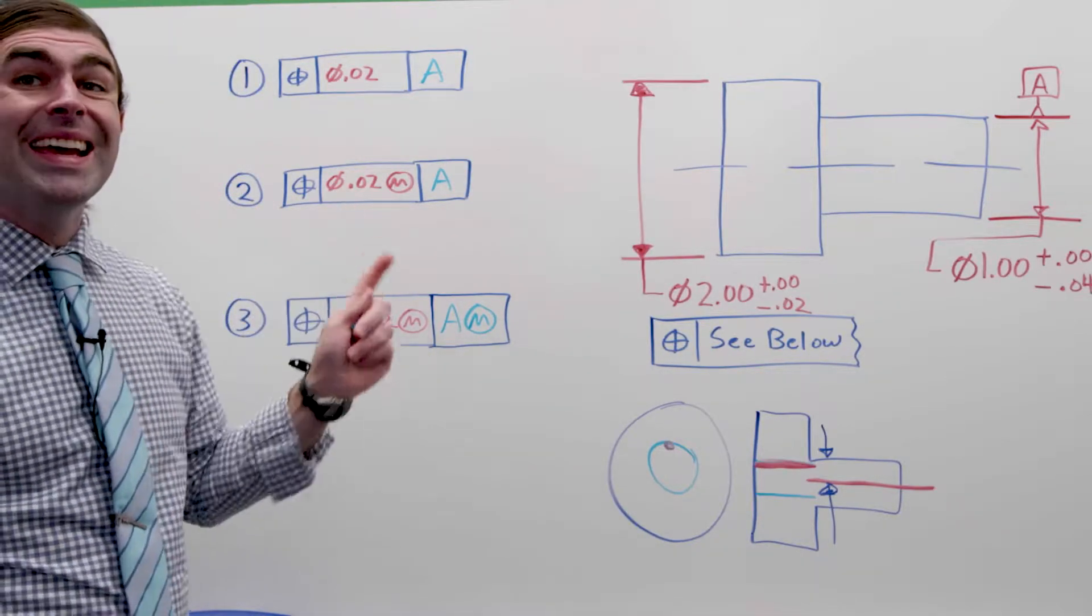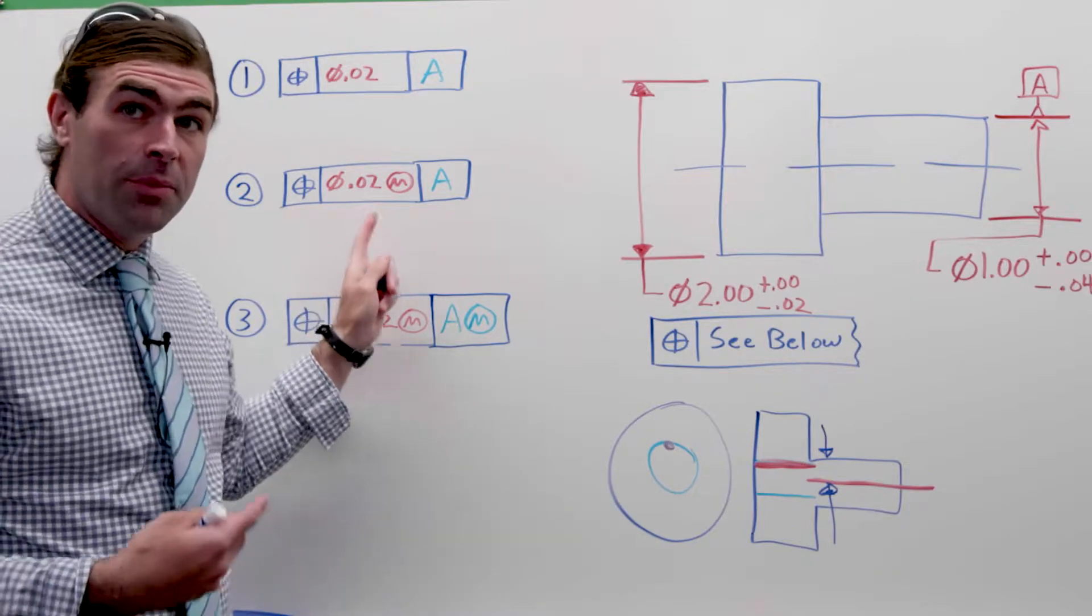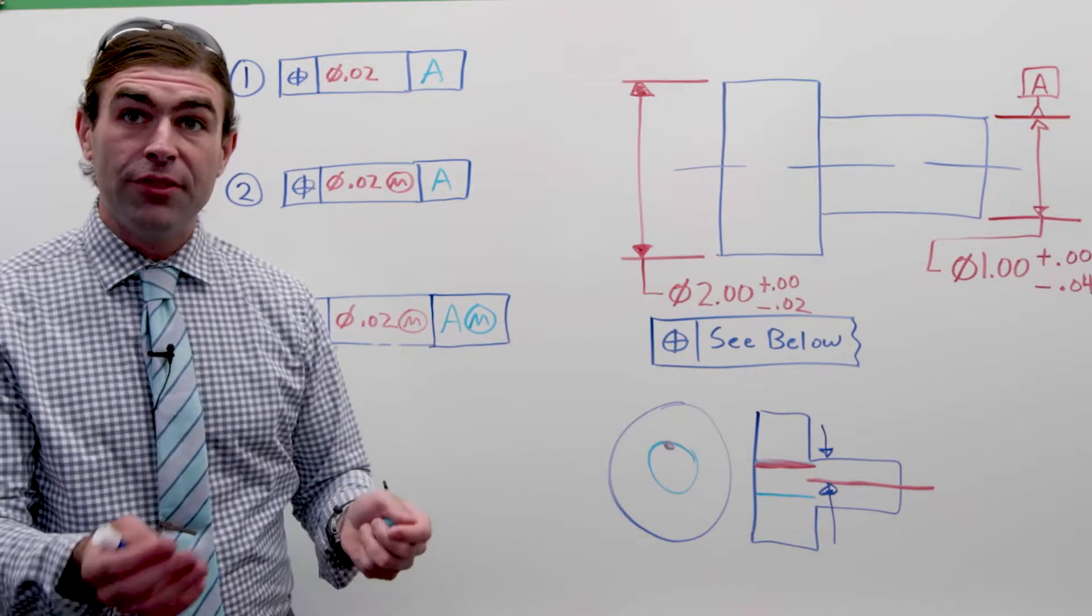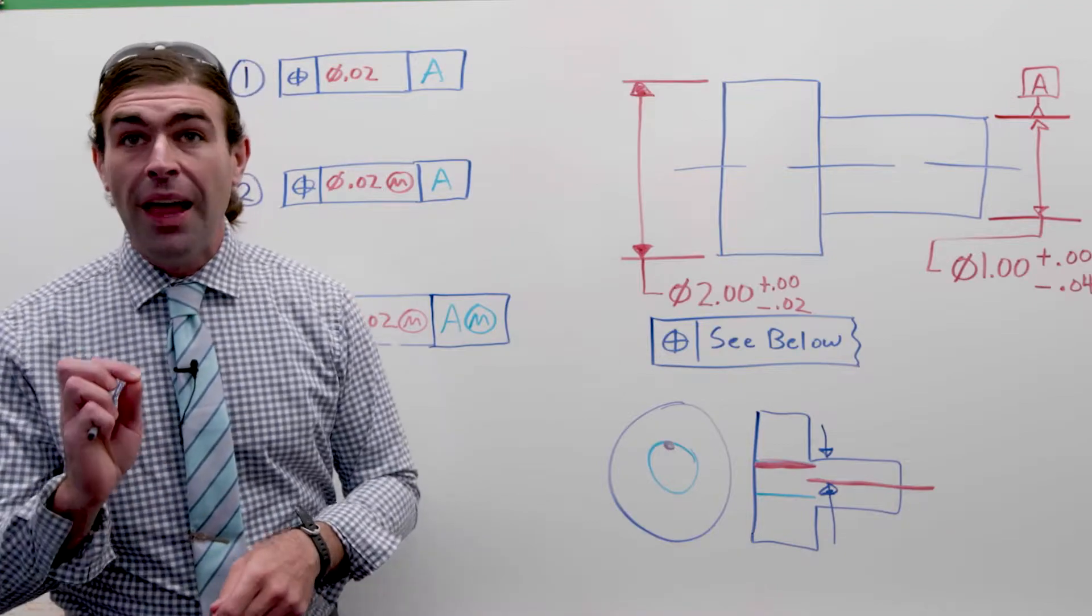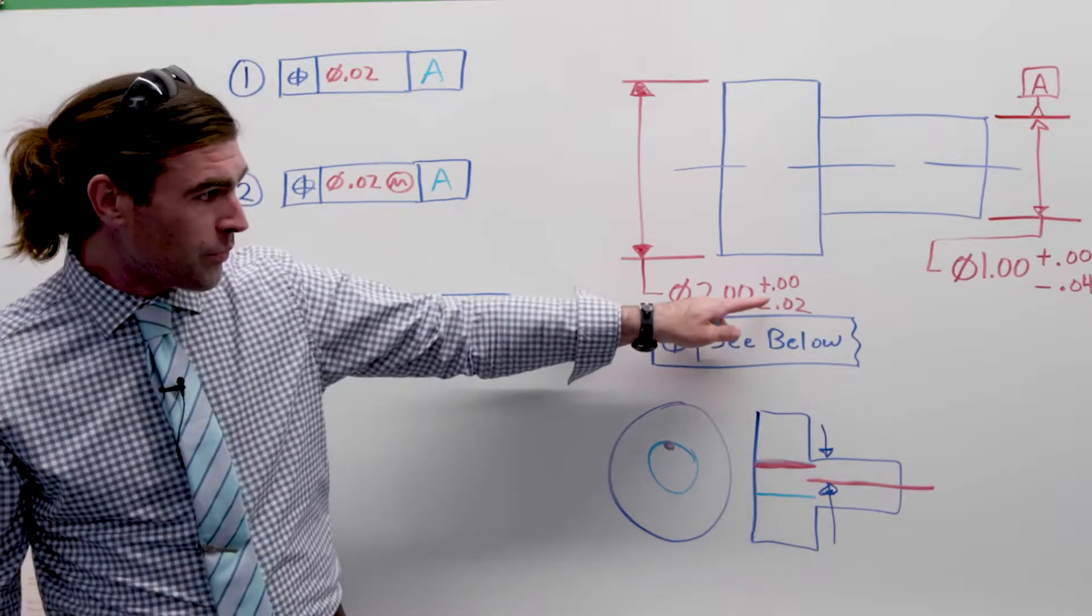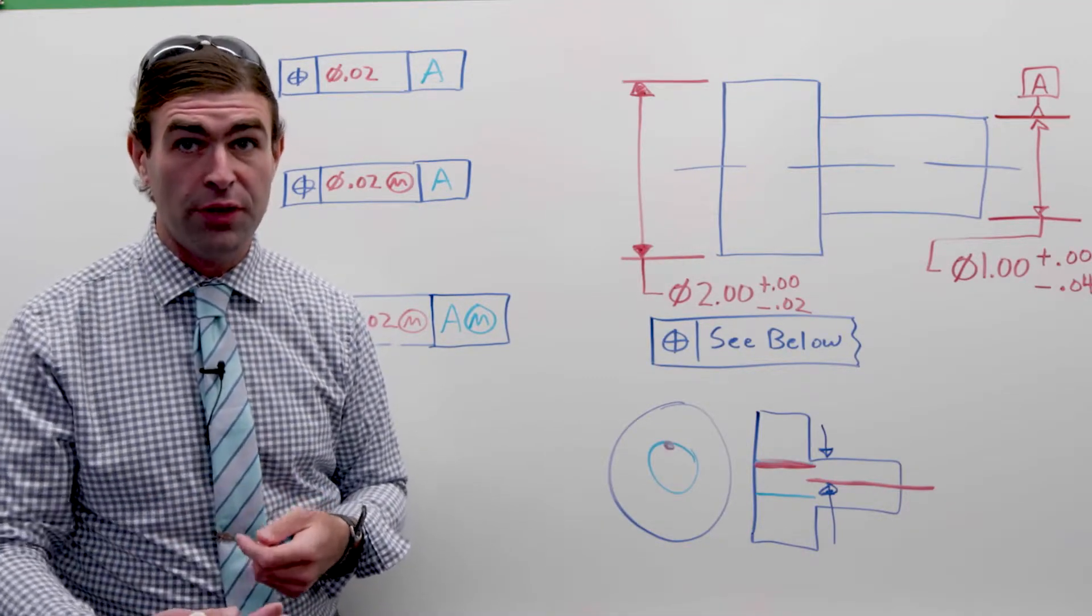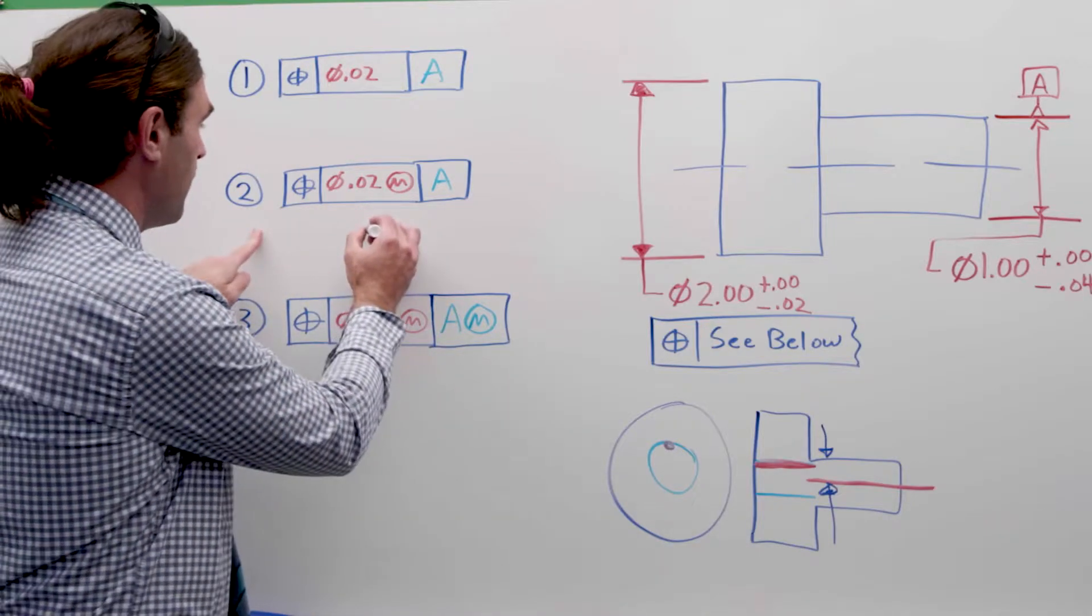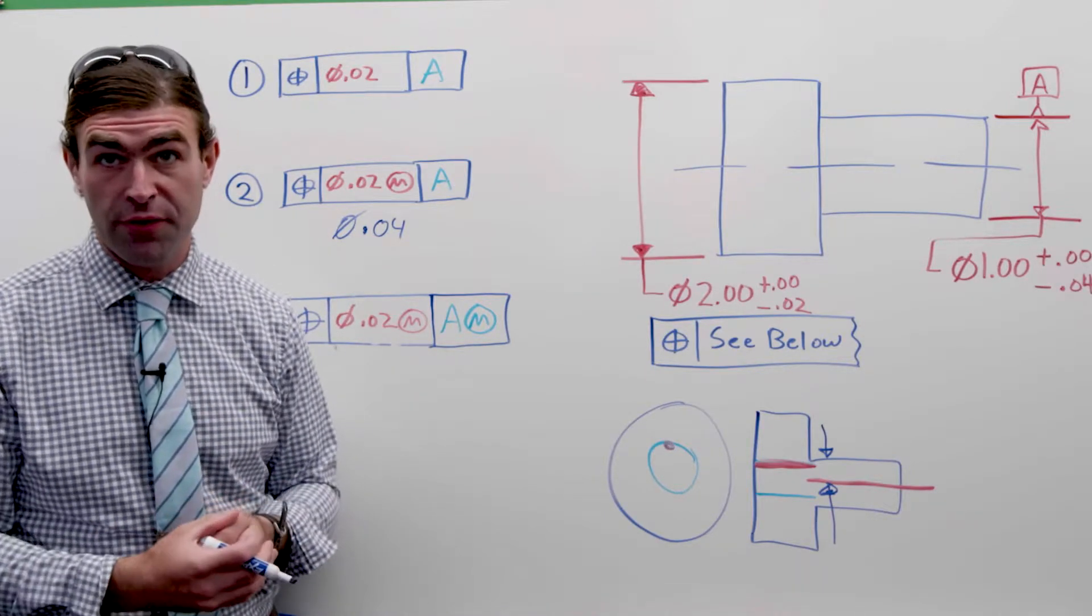Now, let's take a look at this at MMC. This feature has 20 thousandths of positional tolerance when it comes in at MMC, so it's an external feature. So you've got 20 thousandths at 2 inches, but if the feature comes in smaller, you get more positional tolerance. So that's what's known as your bonus tolerance. The maximum bonus tolerance you can have is equal to your total size tolerance. In this case, it's 20 thousandths. So since we're just looking at worst case here, the maximum the axis of these two features can be apart, we're going to add 20 thousandths, our bonus tolerance, to what we already have. So that's going to be our maximum allowable tolerance if the feature comes in small.